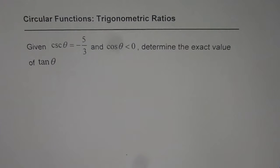Now the question here is: given cosecant theta equals minus 5 over 3 and cosine theta less than 0, determine the exact value of tan theta.